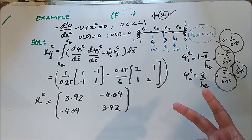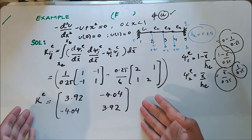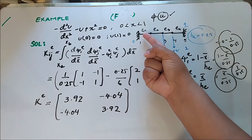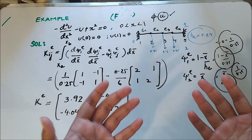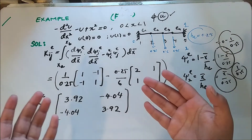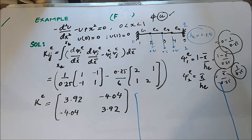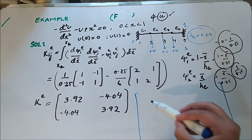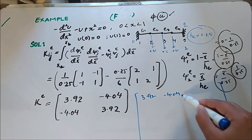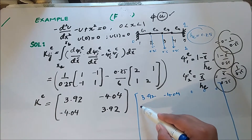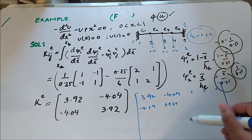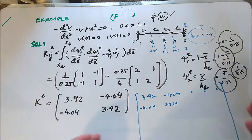There were two things we need to find in order to get the displacement vector. The first is the stiffness matrix, which is straightforward because at the local level we only need to find it for a single element and then assemble them. Since A and the length of each element are the same throughout, we can assemble them. Globally there are five nodes, so there will be five columns. The stiffness matrix has values 3.92 and -4.04, continuing into subsequent rows.